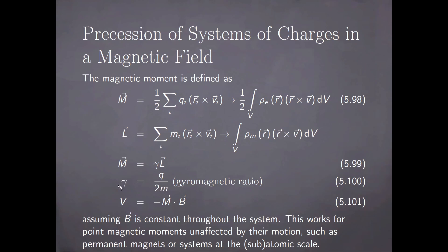But more generally, it can be left unspecified, as it can refer to systems that are not classical in nature. The potential energy for the interaction of such a magnetic moment with a field of magnetic induction that is assumed to be constant throughout the system is defined by the dot product here. This assumption works in the case of point magnetic moments that are unaffected by their motion, such as small permanent magnets or systems at the subatomic scale, including atomic systems. This can apply to electrons orbiting nuclei and smaller systems.